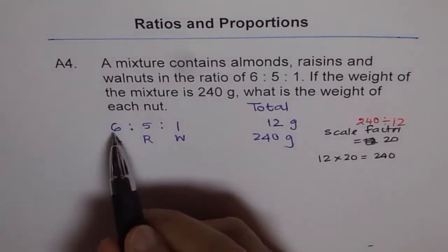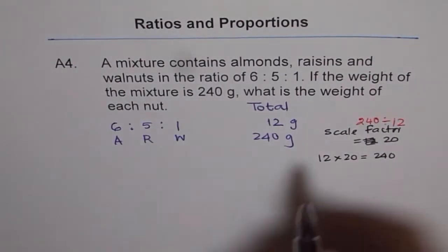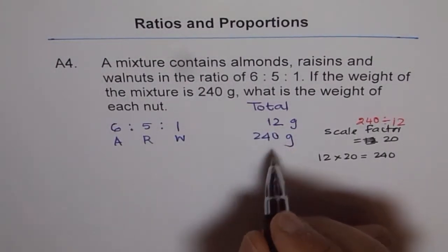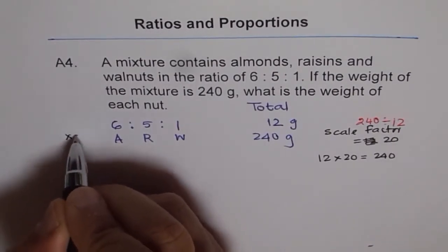That means all these ingredients should be multiplied by 20 to make 240 grams, right? So let's multiply each of them by 20.